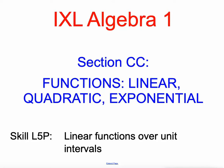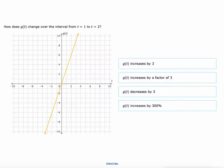Mr. Kaczynski here, going through section double C of IXL's Algebra 1 skills. Today it's linear functions over unit intervals. Real basic linear stuff here. I just got to make sure we understand what they're talking about, lay down the groundwork for some other things. How does g of t change over the interval from t equals 1 to t equals 2? So when the value of t increases by this 1, here's t increasing by 1,